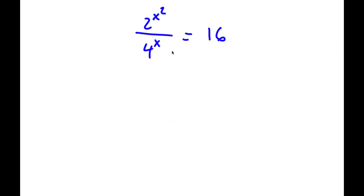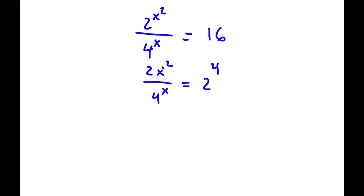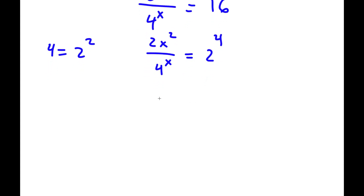Alright, so I have 2 to the power of x squared over 4 to the power of x is equal to 16. Now 16 is equal to 2 to the power of 4. So now I have 2 to the power of x squared over 4 to the power of x is equal to 2 to the power of 4. I'm trying to get base 2 in all my terms. The only one remaining is 4 to the power of x, and 4 is the same thing as 2 squared. So now I have 2 to the power of x squared over 2 squared to the power of x is equal to 2 to the power of 4.